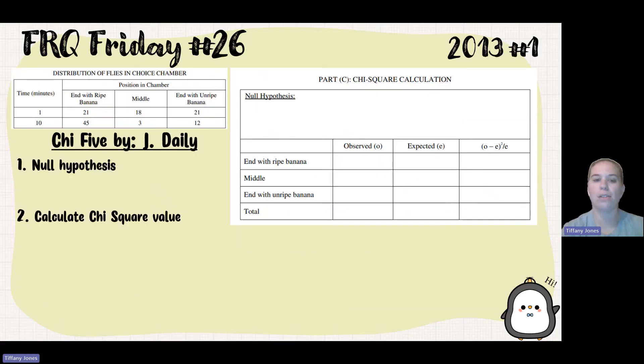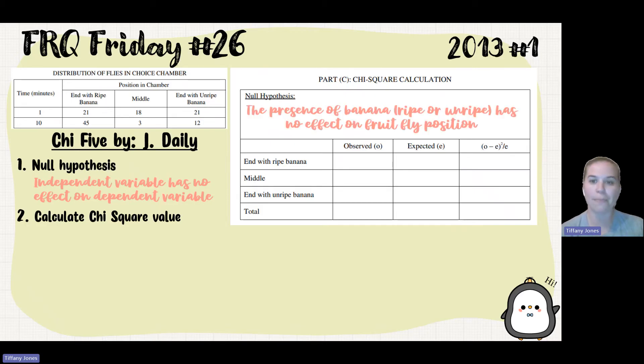Looking here, our null hypothesis is always talking about our independent variable has no effect on dependent variable. Now that is a very broad statement. When you write your null hypothesis, you need to be specific about the experiment, what experiment we're doing. So I'm going to say the presence of banana, ripe or unripe, has no effect on the fruit fly position.